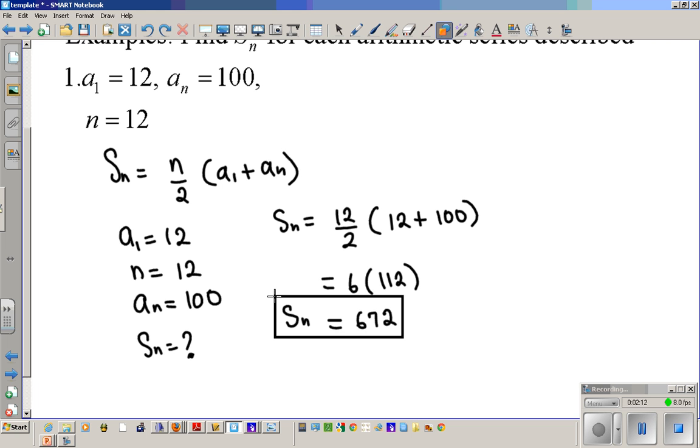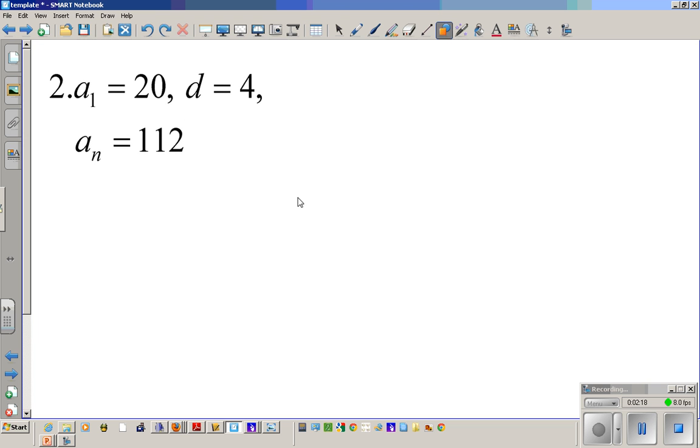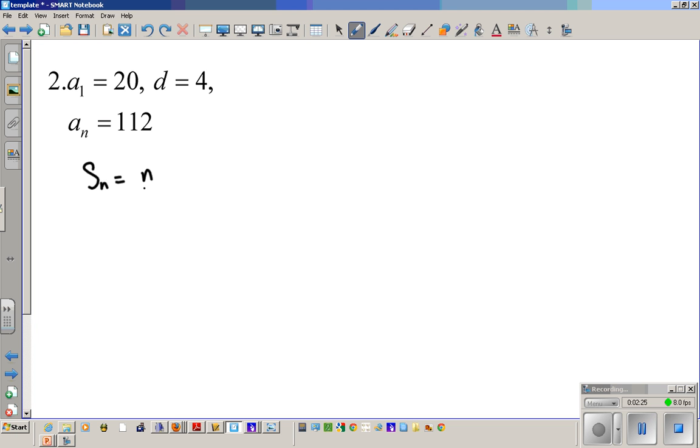Alright, let's go ahead and try another example. Number 2. Same process, we're going to find SN given this information. Let's rewrite that formula again. SN equals N over 2 times A1 plus AN. Now let's see.